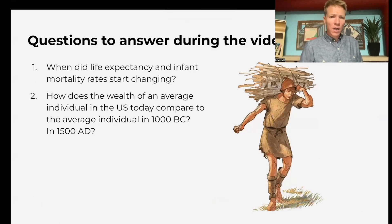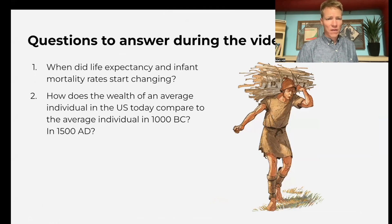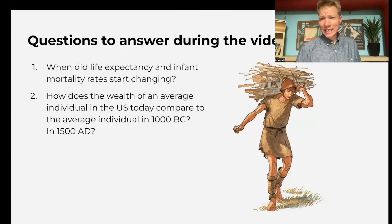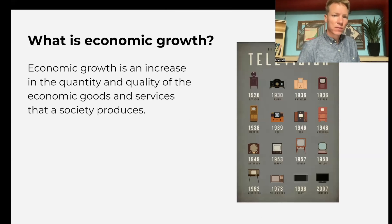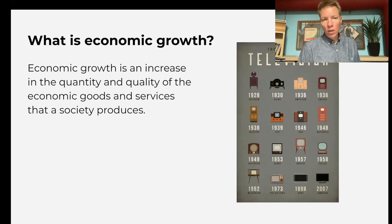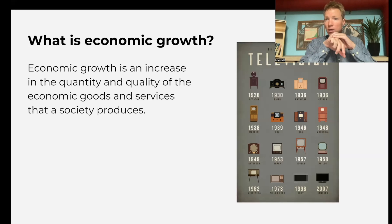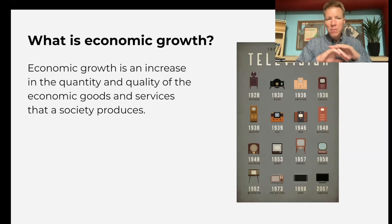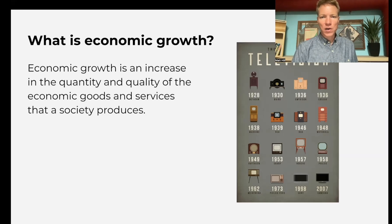Here are some questions to answer as they watch the video: When did life expectancy start rising? How does the wealth of an average individual in the US today compare to an average individual in 1000 BC or 1500 AD? We are much, much richer due to this economic growth. And what exactly is economic growth? Well, it's an increase in the quantity and quality of goods and services. When you see that growth take off, it means the country or the world has a much higher productive capacity — they can make so much more stuff, and that stuff is of higher quality.